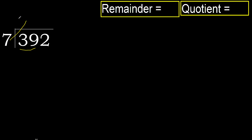7 multiplied by which number is nearest to 39 but not greater? 7 multiplied by 6 is 42 — 42 is greater. Multiply by 5: 35 is not greater. OK, subtract: 39 minus 35 equals 4. Next digit.